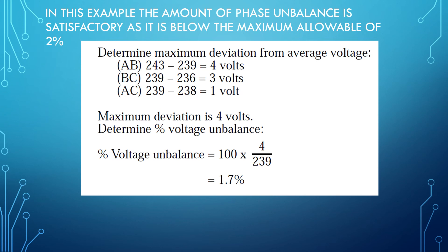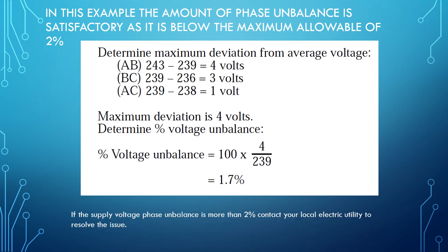Plugging these numbers into the equation of 100 times 4 over 239, we find that our phase unbalance is 1.7%.